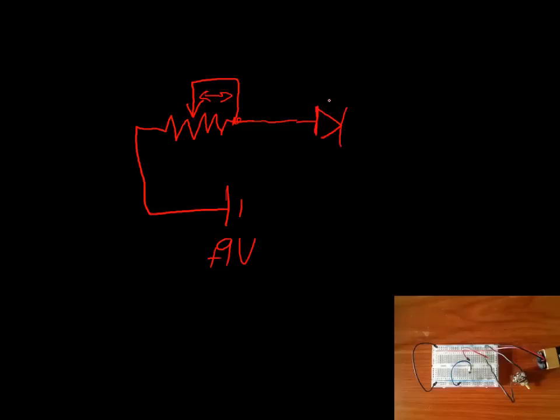Then it goes into a light emitting diode and then back to ground. So a very simple circuit made on our breadboard there.